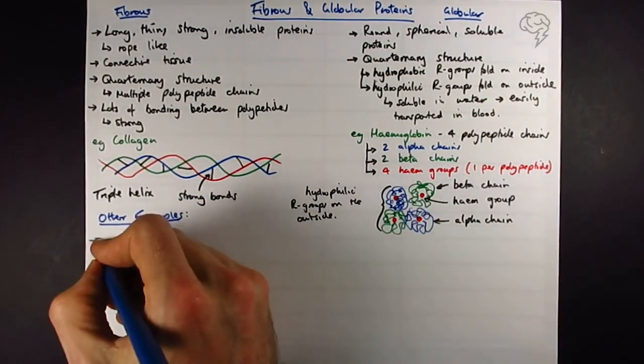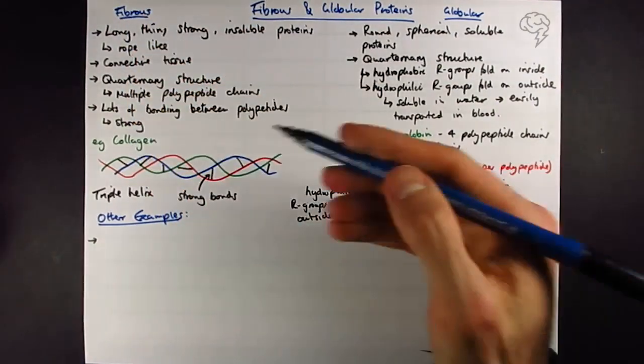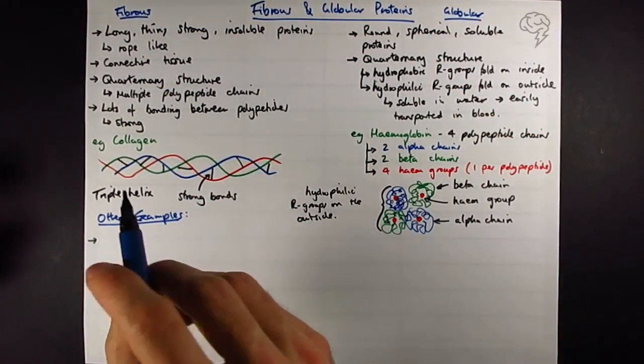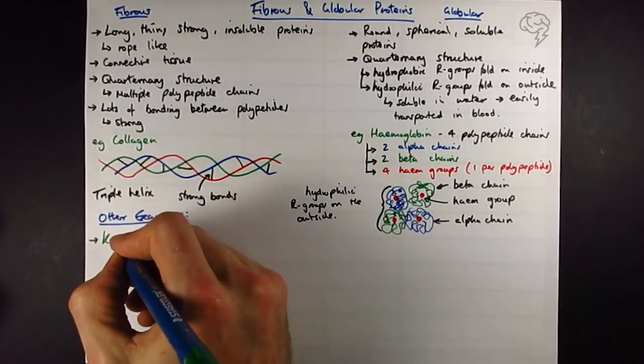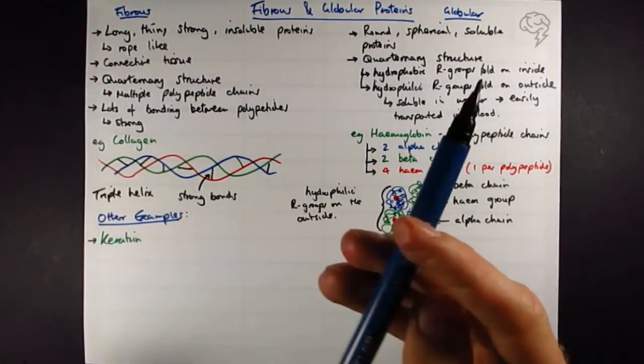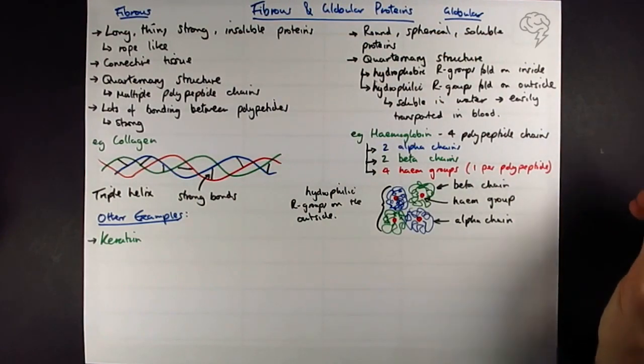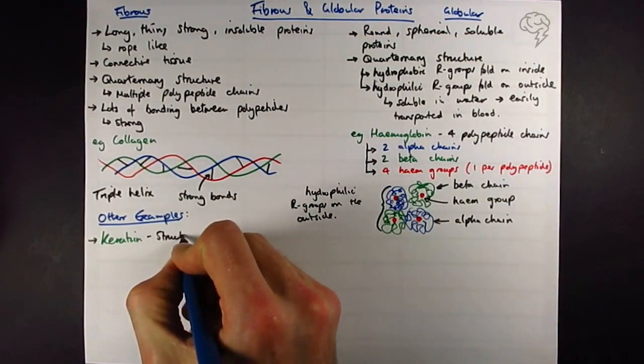Now for a few other examples that you OCR students need to know. You also need to know that collagen is a great example for the fibrous proteins as a whole. Keratin is a structural connective tissue protein, and it's found in hair, nails, skin, and horns.